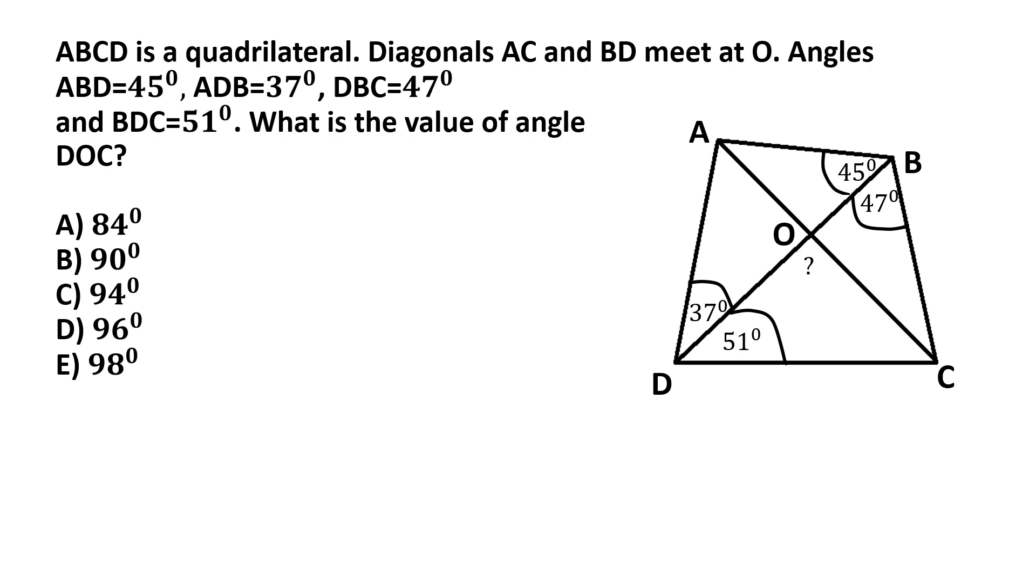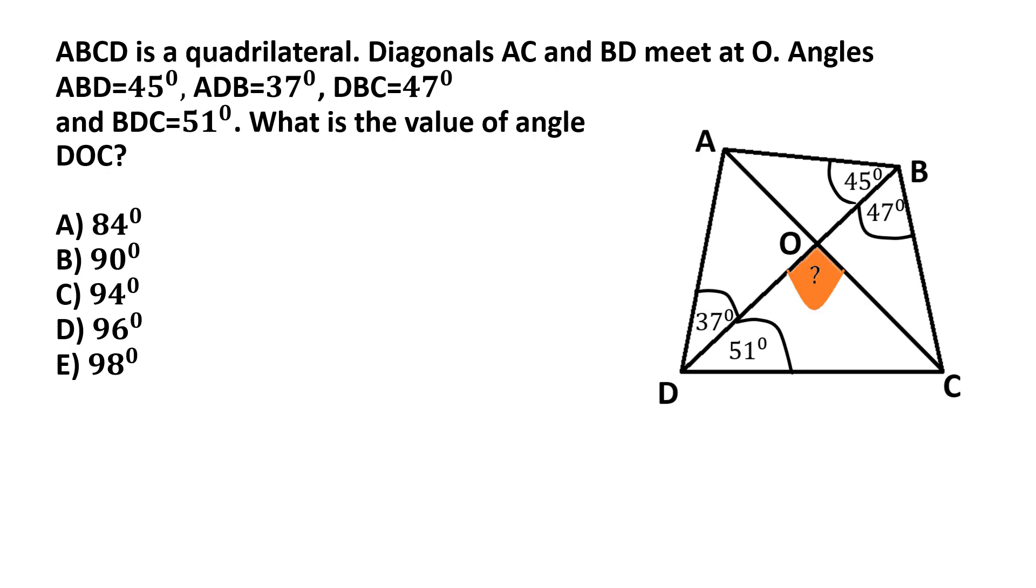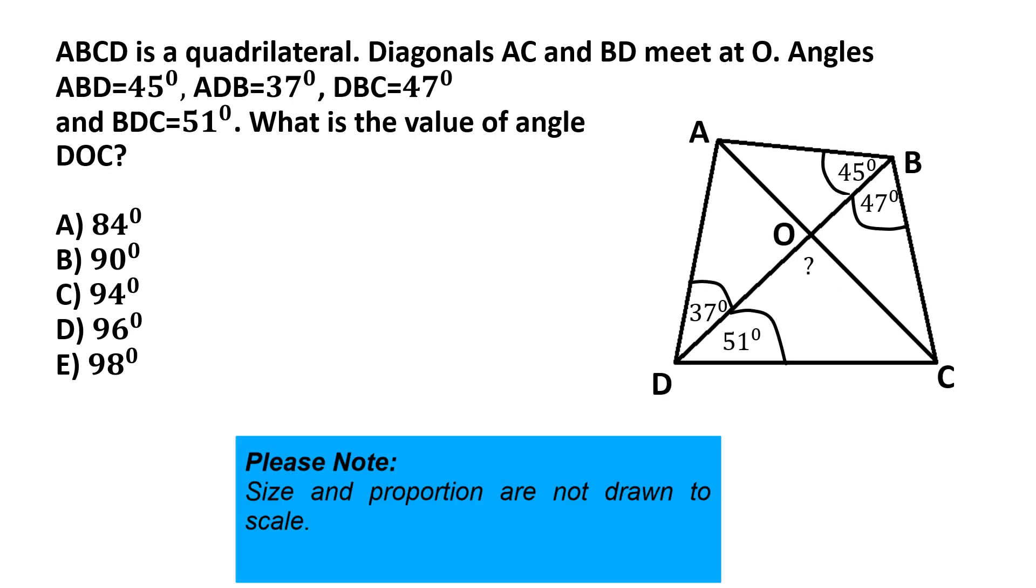...whose diagonals AC and BD meet at the point O, and we are given some angles marked in the figure. Angle ABD is 45 degrees, angle ADB is 37 degrees, angle DBC is 47 degrees and angle BDC is 51 degrees. What is the value of angle DOC that's indicated in the figure by the question mark? We start this problem by first of all noting that...